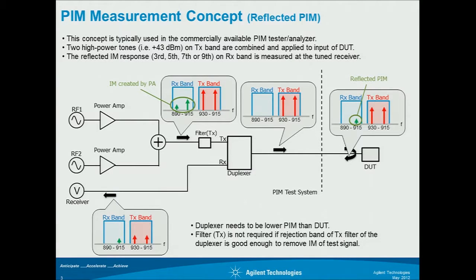The key part of this measurement is actually the duplexer. We have to have a lower PIM duplexer than the actual DUT. If the PIM of the duplexer is higher than the DUT, we cannot measure the PIM of the DUT.